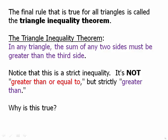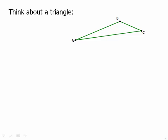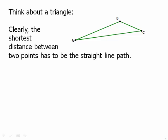Why is this true? Well, think about a triangle. Here's a typical triangle. Clearly, the shortest distance between two points has to be the straight line path. That's just a fundamental geometric fact.